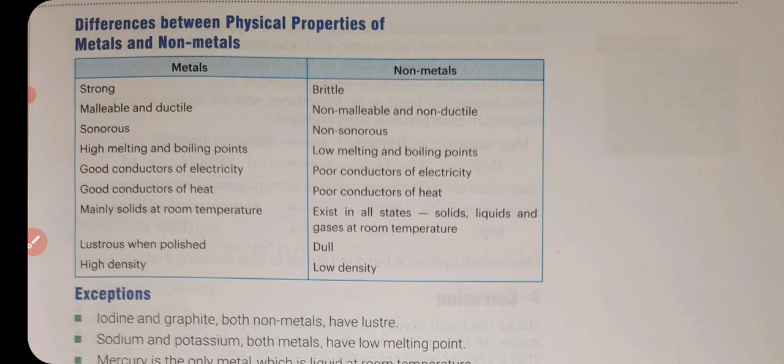Non-metals, on the other hand, are brittle — if you hit them, they break. They are non-malleable and non-ductile; you cannot hammer them into a sheet or pull them into a wire. They are non-sonorous — if you hit them, they will not produce a ringing sound. They have low melting and boiling point, are poor conductors of electricity as well as heat, exist in all three states at room temperature, are dull in appearance, and have low density.